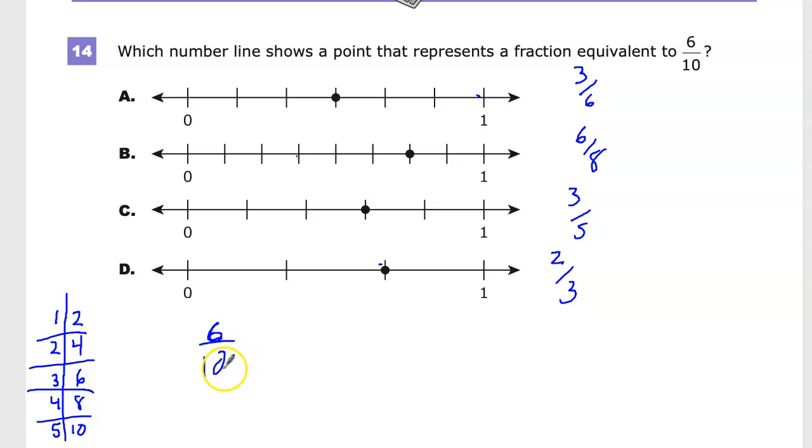And this will actually help me in a second if I use it properly. So if I'm going to reduce six tenths, I'm going to say, okay, how many times does two go into six? Well, here's six. It goes in three times. And then two goes in five times. So three fifths is the equivalent fraction. And you may notice that now I have a match here and here.